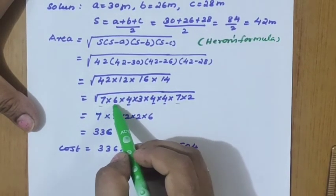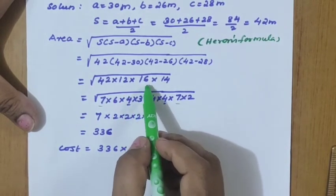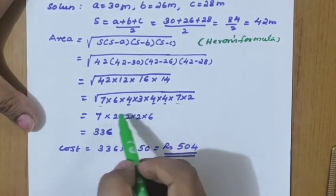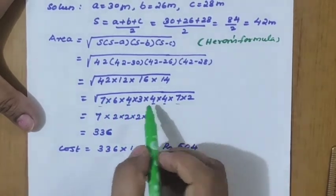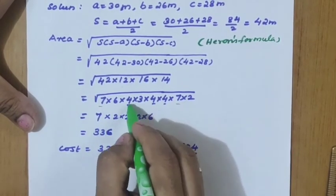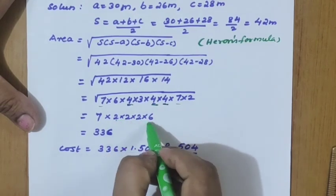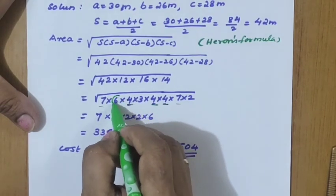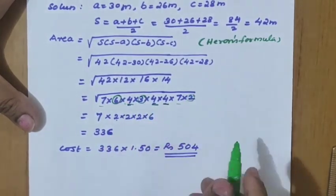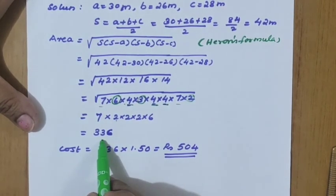Breaking down: 42 = 7×6, 12 = 4×3, 16 = 4×4, 14 = 7×2. Under the root, 7 appears twice so one 7 comes out; similarly pairs of other factors simplify. The final area works out to 336 square meters.